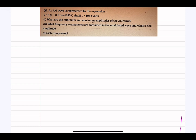Now let's solve the second example. An AM wave is represented by the expression: v = 5 × (1 + 0.6 cos(6280t)) × sin(2.11 × 10⁴ t) volts. Find: one, the minimum and maximum amplitude of the AM wave; and two, what frequency components are contained in the modulated wave and what is the amplitude of each component.